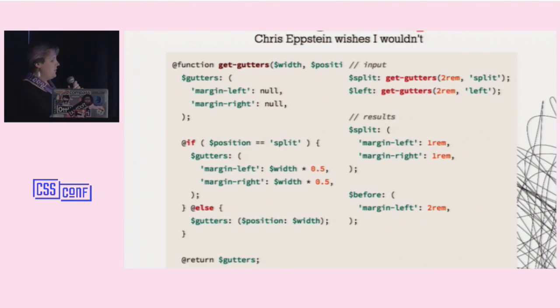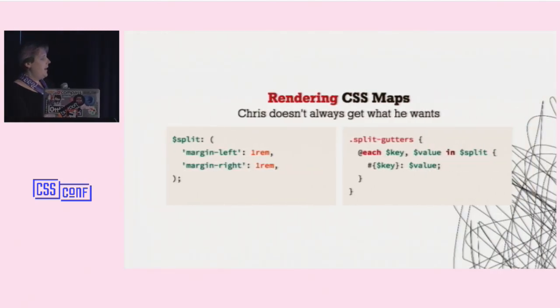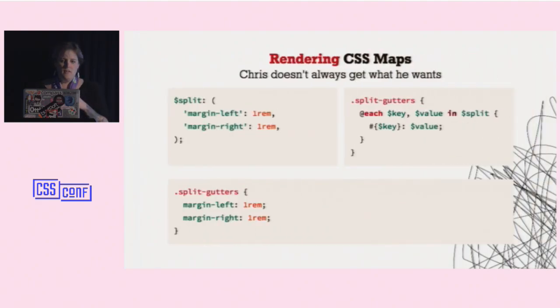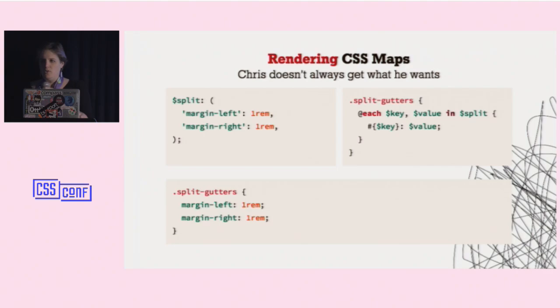We've got a get gutters function that returns a map of the gutters we're going to want based on whether it's split or not split. So, if it's split, we get a margin left and a margin right that are both half the gutter. And otherwise, we just get whatever position was set either left or right. And we just return that. So, the results are if we wanted split, we get margin left and margin right one rem. And if not, if we ask for margin left, we get it all on the margin left. And then I can just render that. And rendering is a pretty simple loop. I ask for the key and the value. And I output the key as a property and the value as a CSS value. And suddenly, I've just turned my map directly into CSS. And there's more complex versions of this. You can have a rendering function that would then do nested rendering. And you can do very complex SASS rendering that way. So, that's what it looks like.